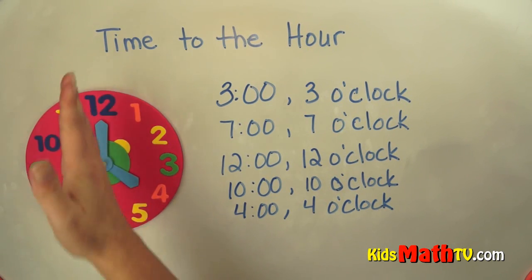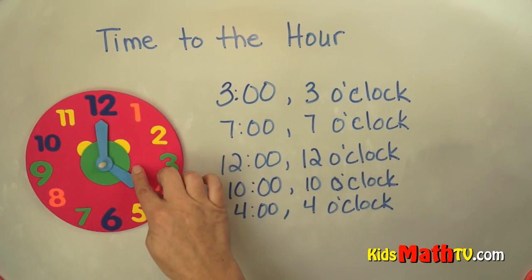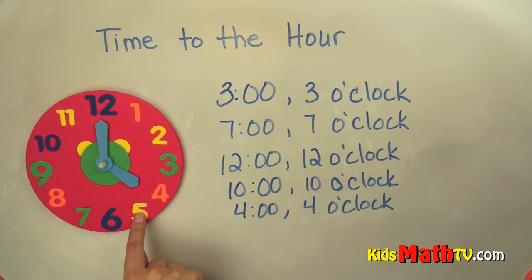So if the big hand is pointing straight up to the 12, that is to the hour. And we simply look at the little hand and see which one it's pointing to. And that tells us the time. That's the end of our lesson on time to the hour.